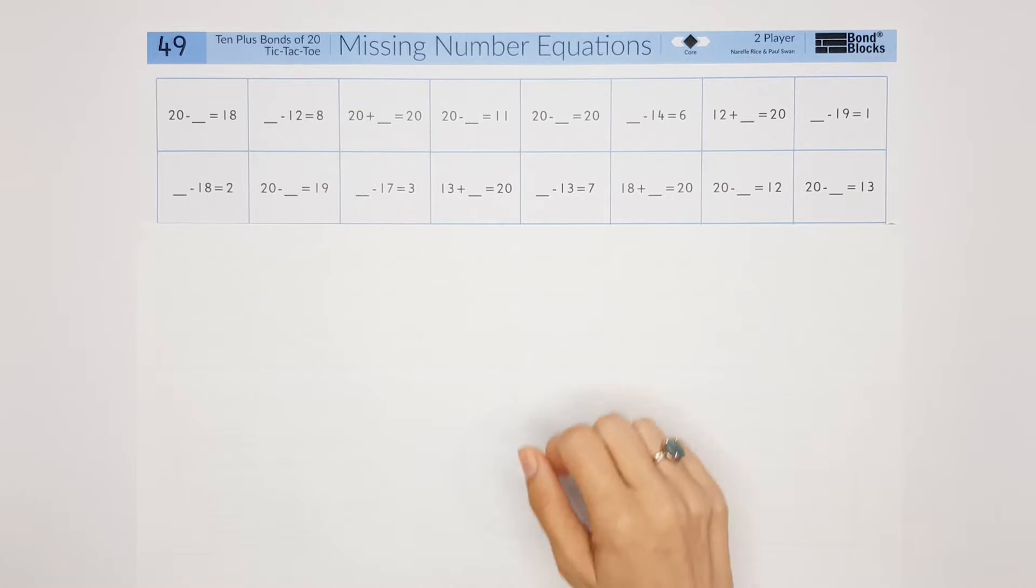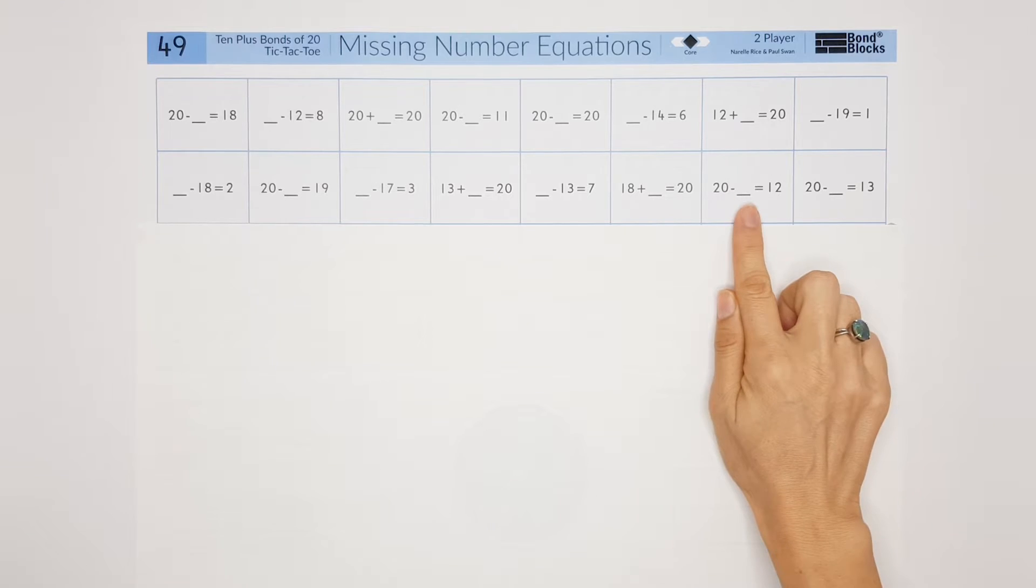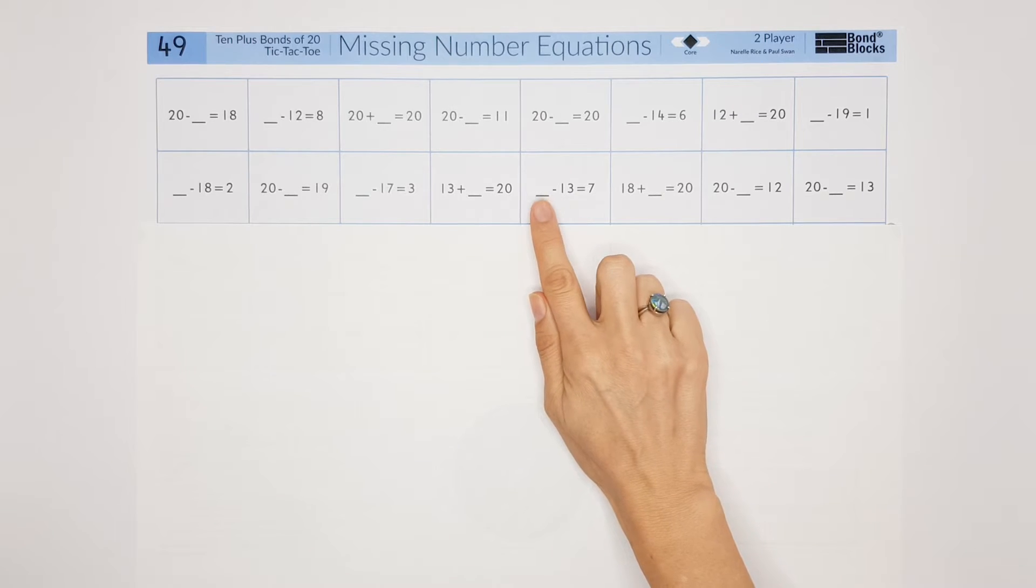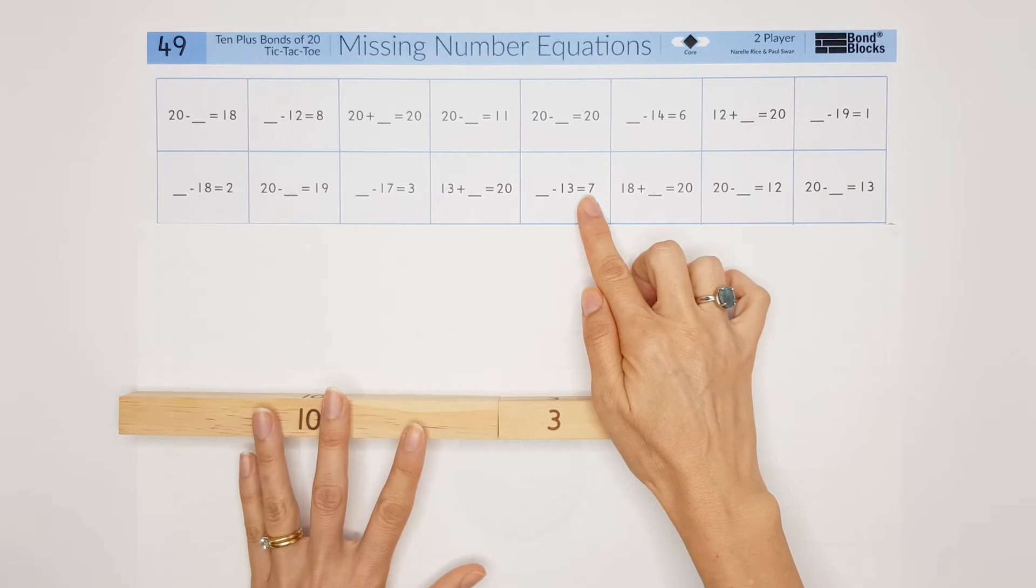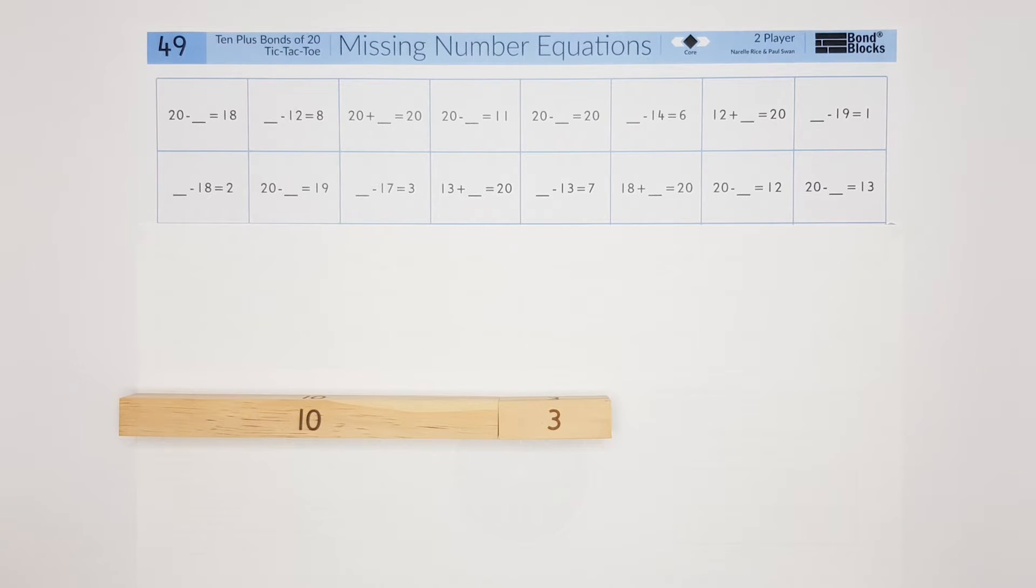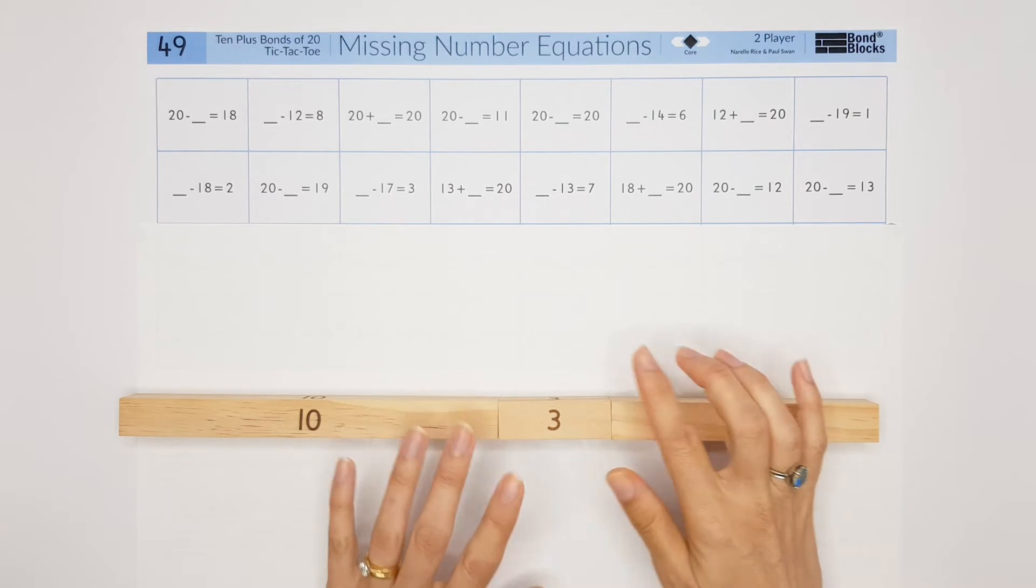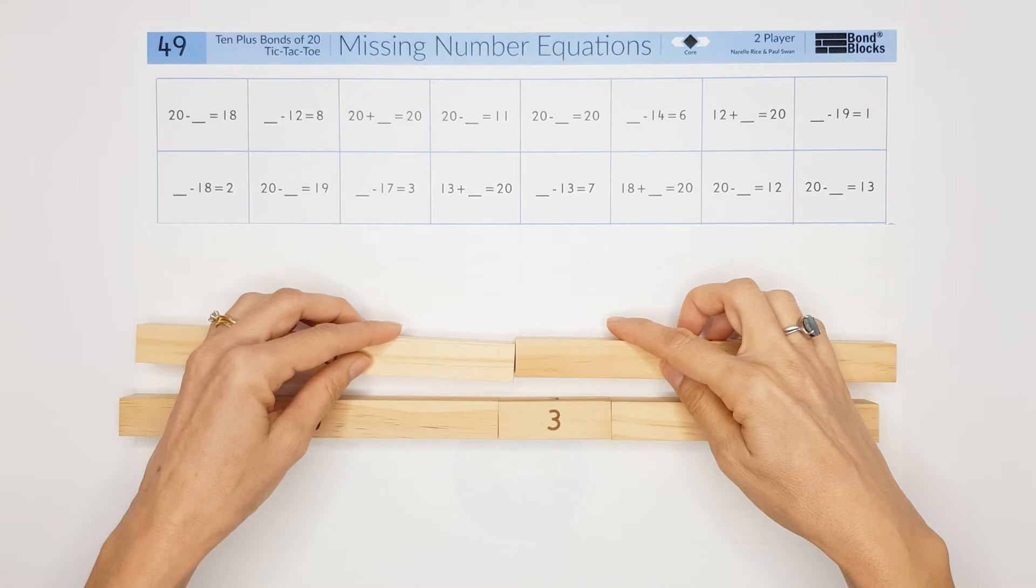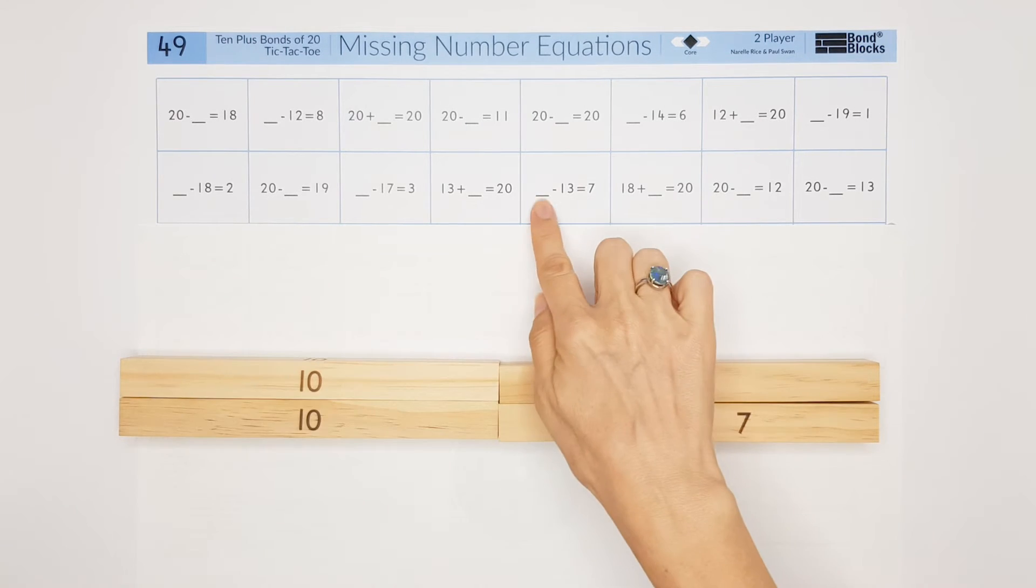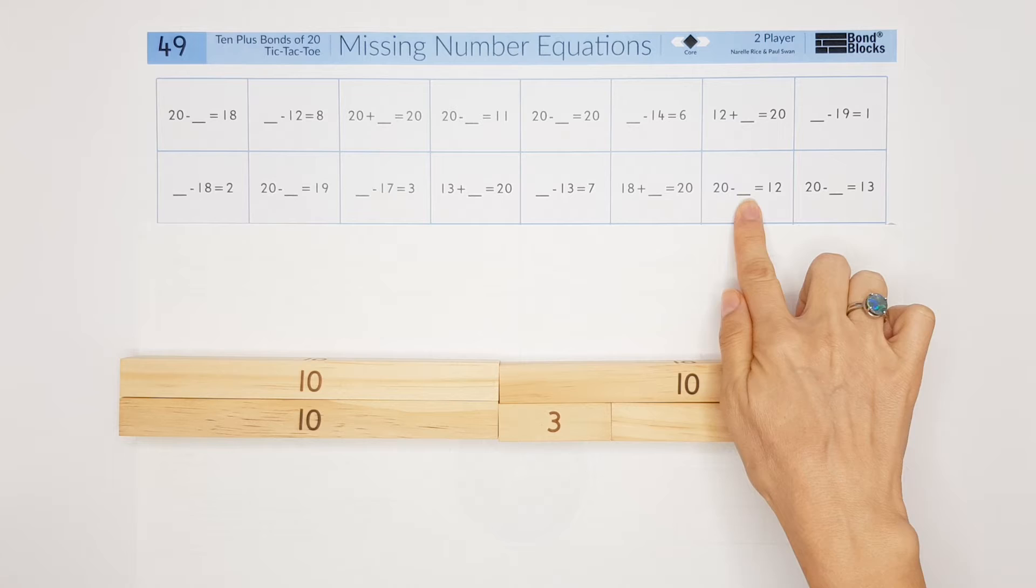I'm going to model for you three examples, solving them using part-part-whole. So in this one, whole subtract part equals part. I know the part of 13, I know the part of 7, so I need to join the two parts together to find the whole of 20. So 20 would be the missing number.